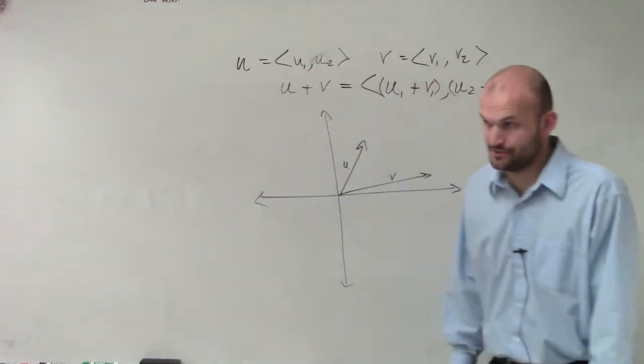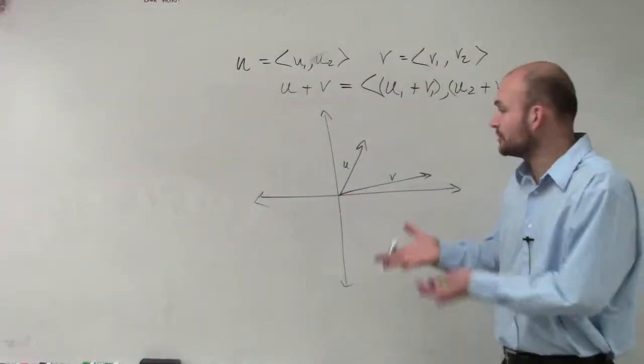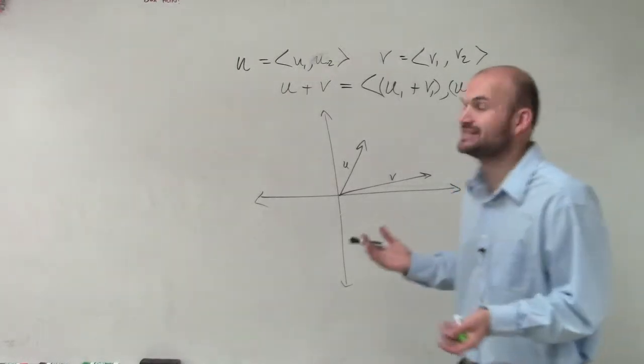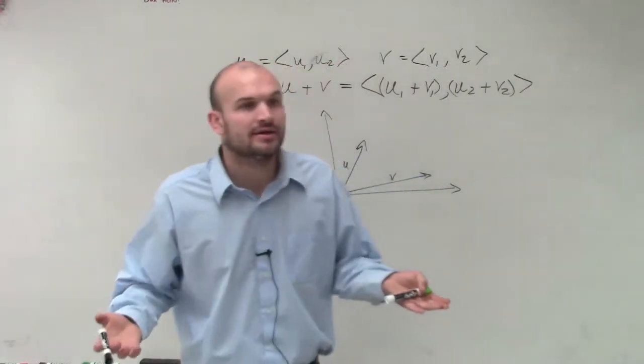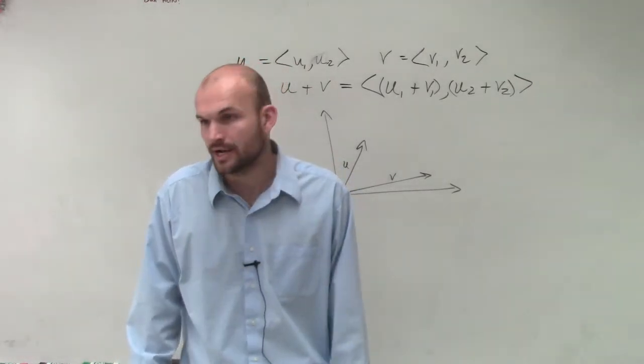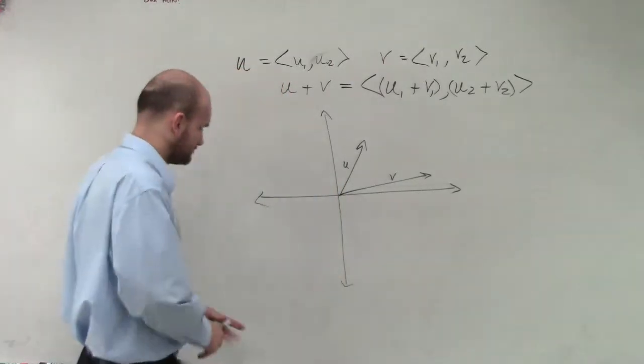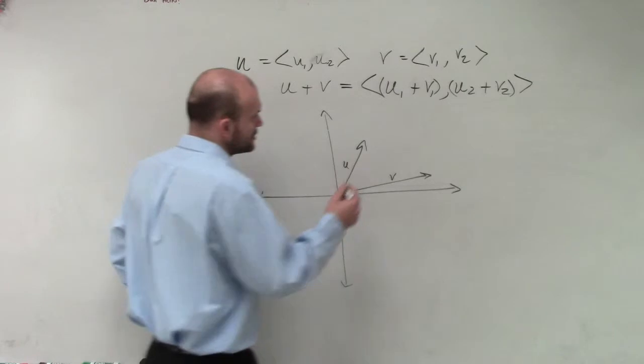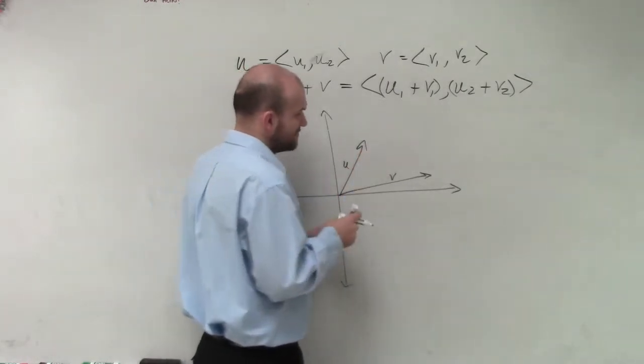So if I'm going to add these two, all I'm simply going to do is I'm going to pretty much transpose one to the other. Now remember, u plus v, it doesn't matter which way you add, right? If you say 3 plus 4 and 4 plus 3, it's not going to really matter, right? So, what I'm going to do is you can transpose, remember these have terminal points.